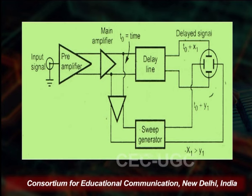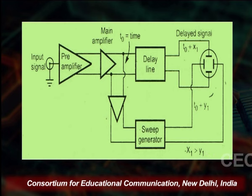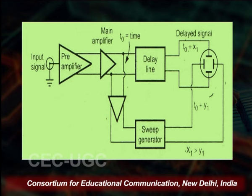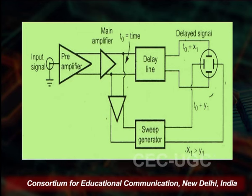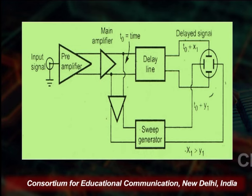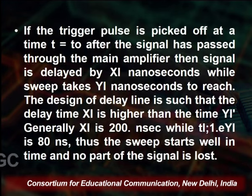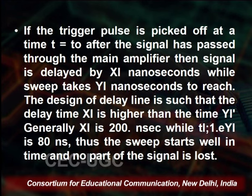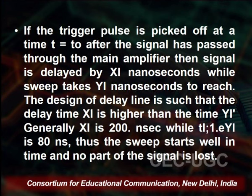A sweep generator is there so any loss will be accounted for. The input signal is not directly sent to the output; instead we use the delay line also, after amplifying the final signal. The trigger pulse is picked off at time t = t₀, after the signal has passed through the main amplifier.